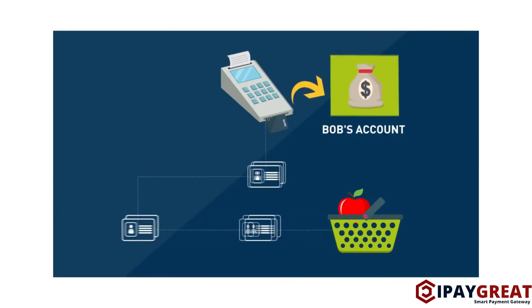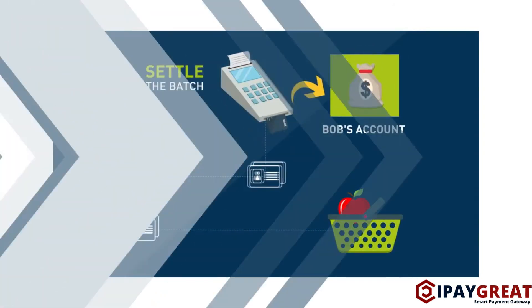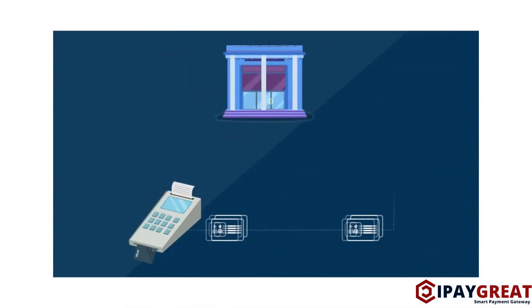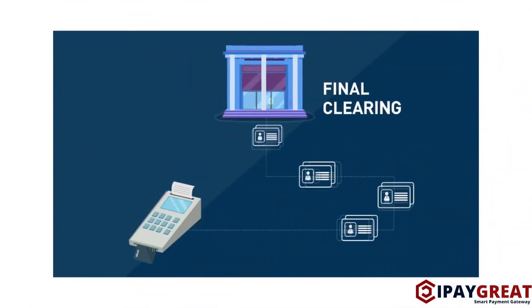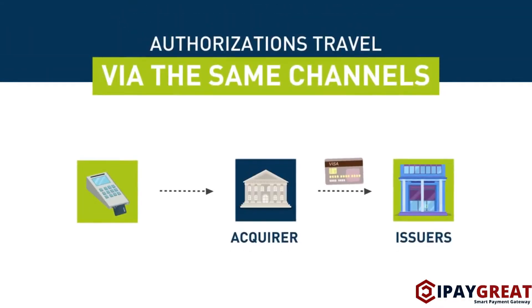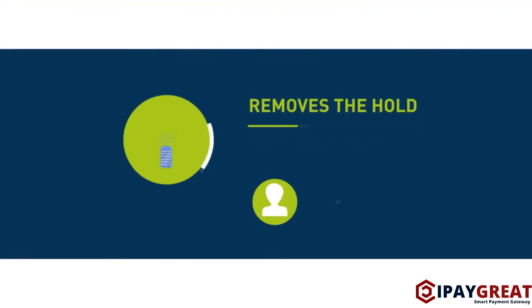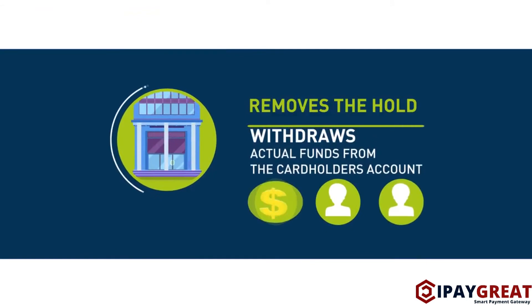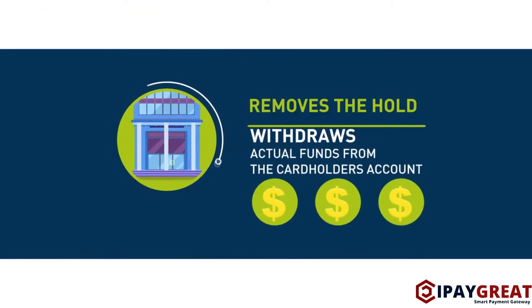And to become a deposit in Bob's account, he needs to settle the batch. When Bob settles the batch, each authorization travels back to the respective issuing bank for a final clearing. The authorizations travel via the same channels as before — first they go to the acquirer, and then via credit card networks to the issuers. Each issuing bank removes the hold and withdraws actual funds from the cardholder's account instead.